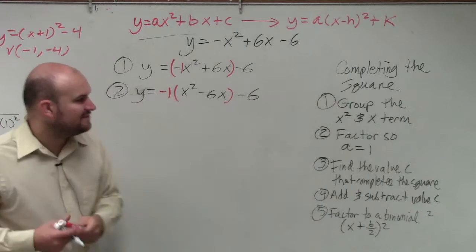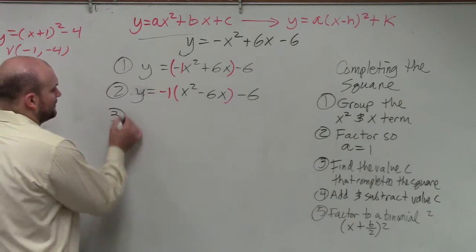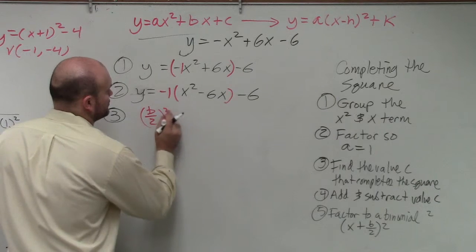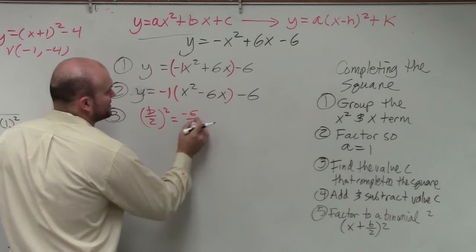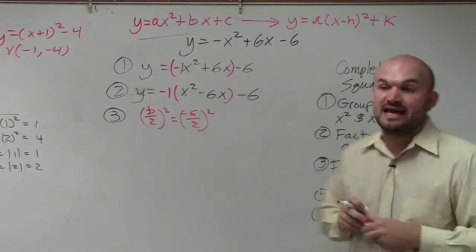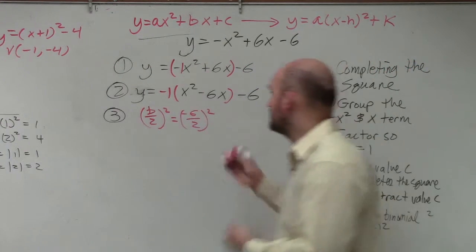Now, step number three. Find the value c that completes the square. So we just do b divided by 2 squared. Negative 6 divided by 2 squared. Negative 6 divided by 2 is negative 3. Negative 3 squared is 9.